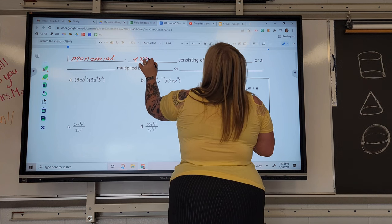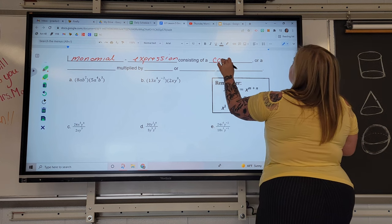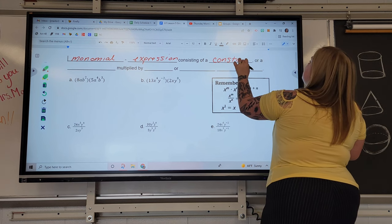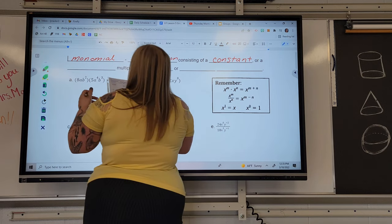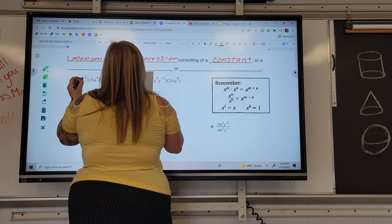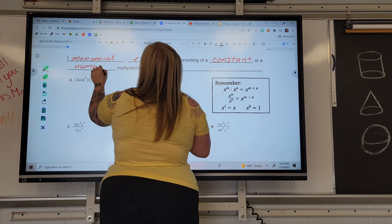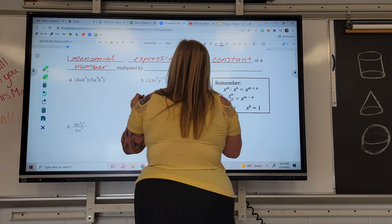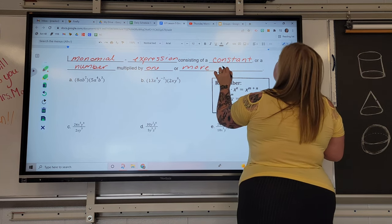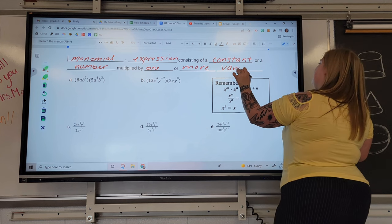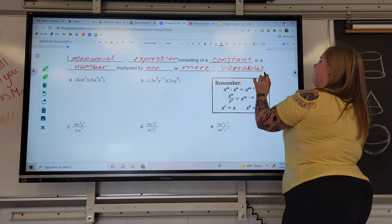So a monomial is an expression consisting of a constant, constant just being a number attached to a variable, or just a plain old number. Consisting of a constant, or a number, multiplied by one or more variables.